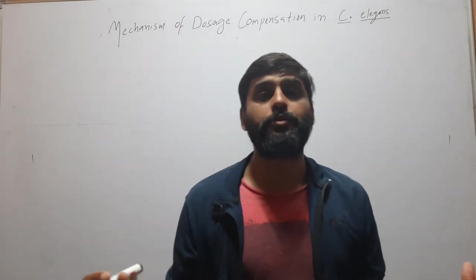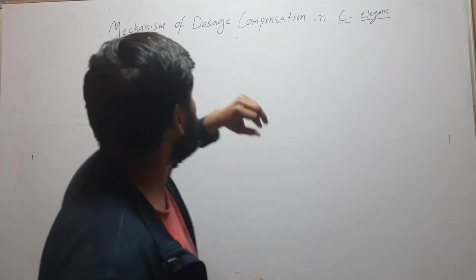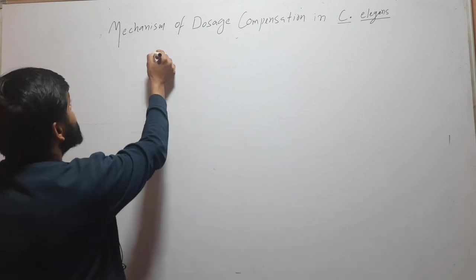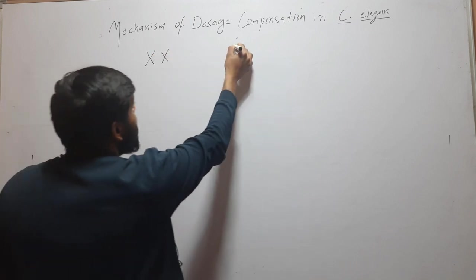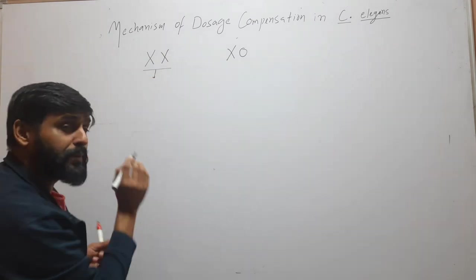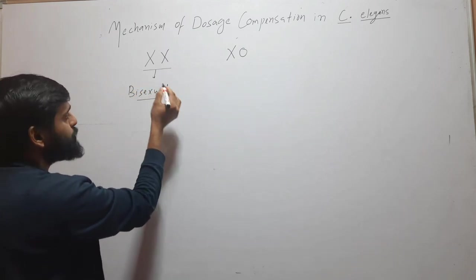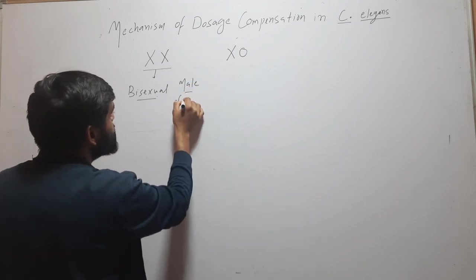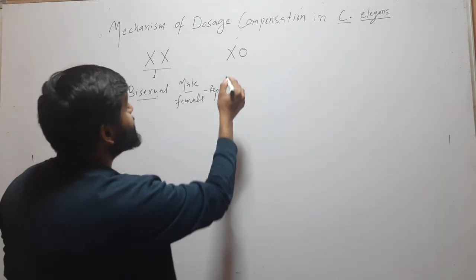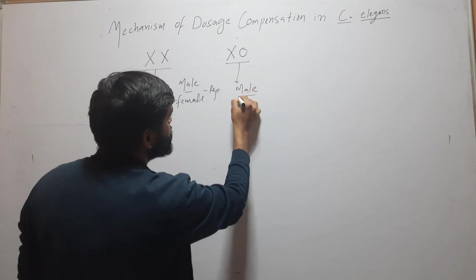Welcome to this video where we will discuss the mechanism of dosage compensation in C. elegans. Before discussing dosage compensation, we must understand sex determination in C. elegans. Here, the XX and XO type of sex determination is found. However, XX is not female — XX is bisexual, meaning it has both male and female reproductive structures.